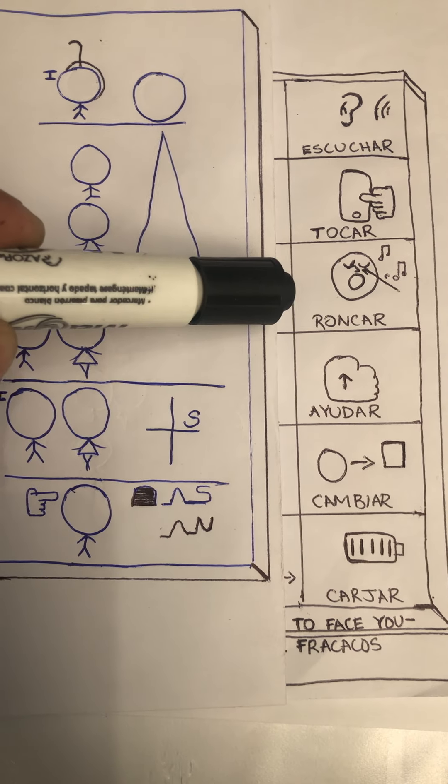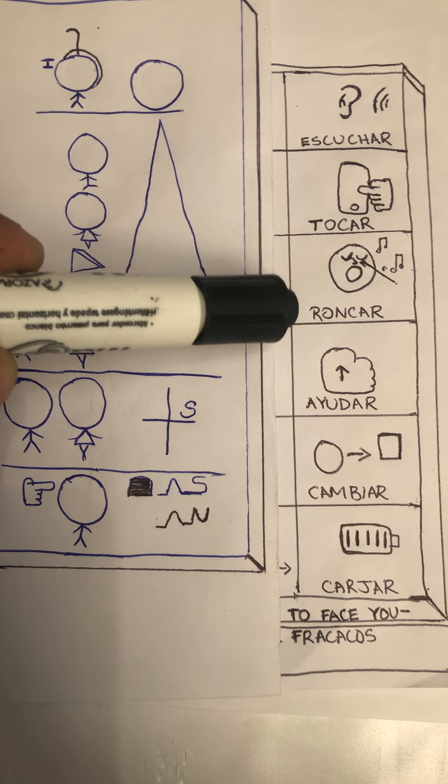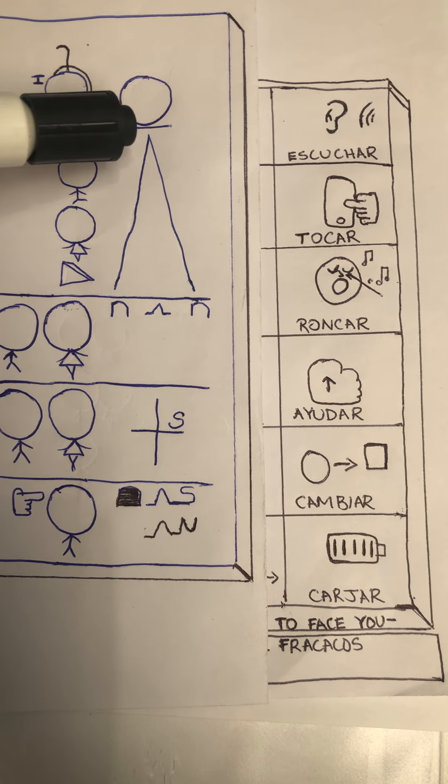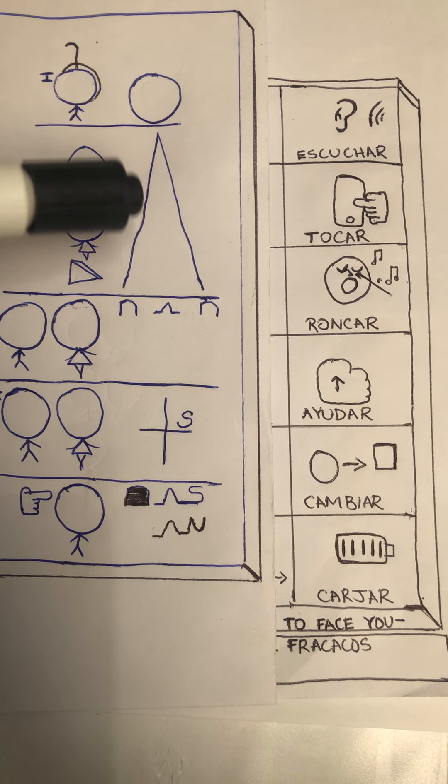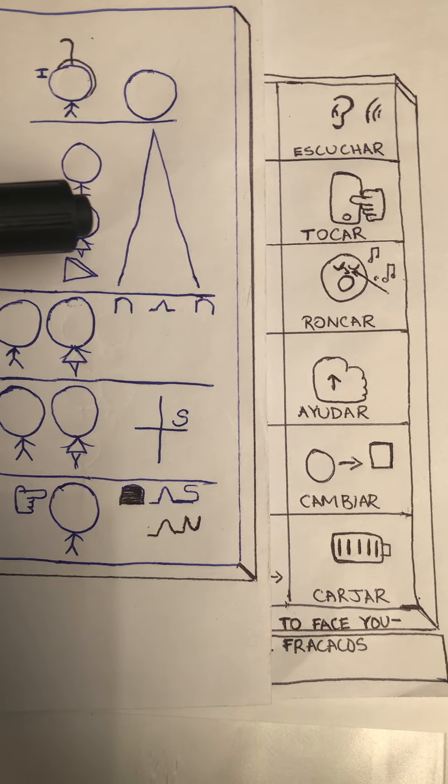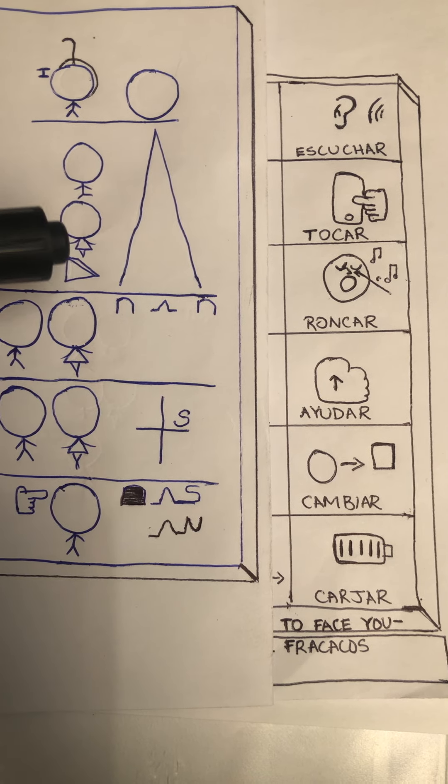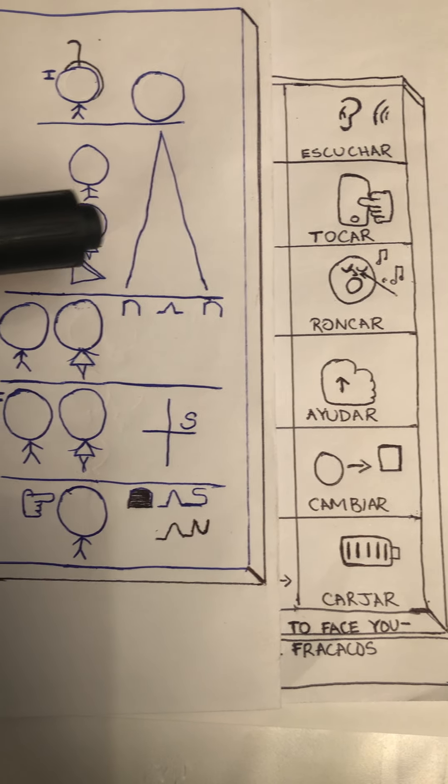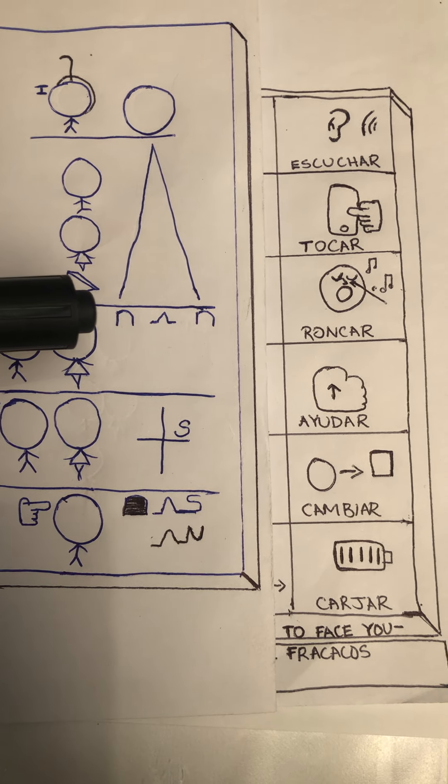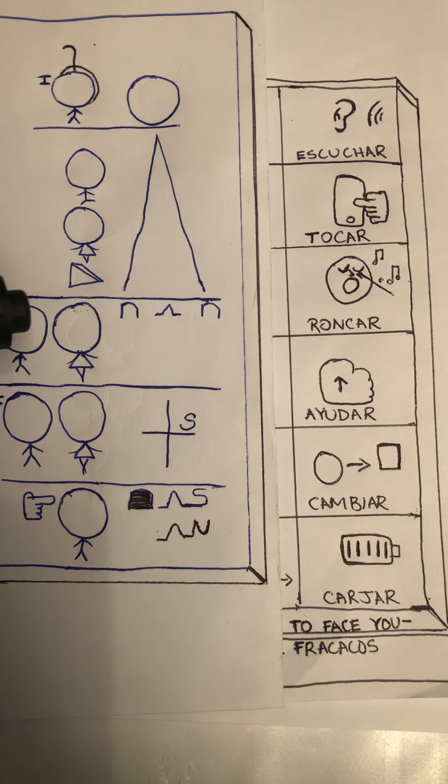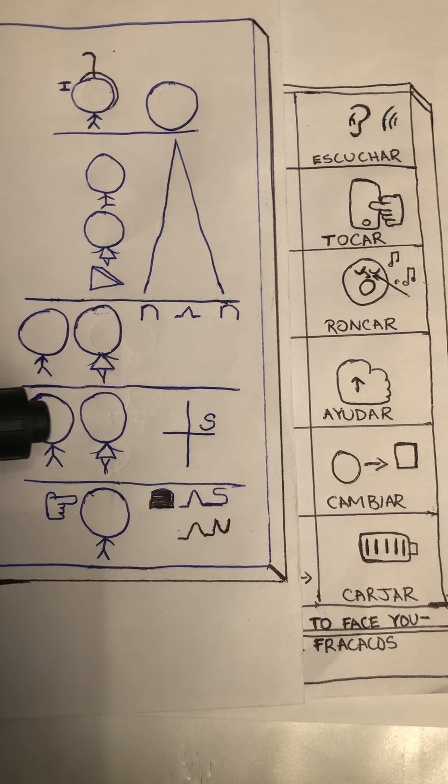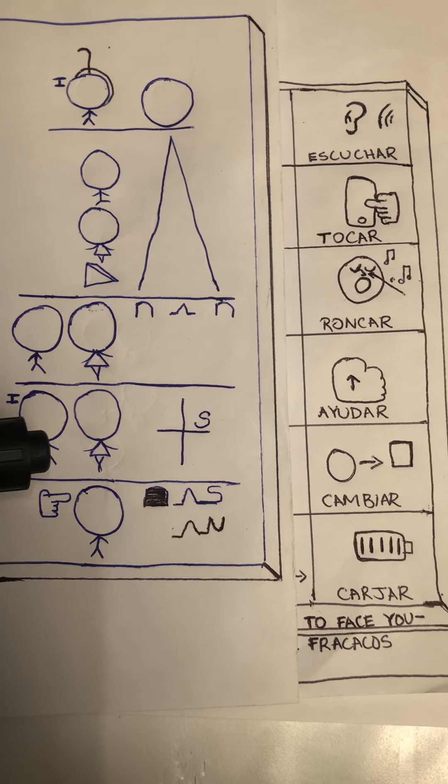Roncar, snore. Yo ronco. Él ronca. Ella ronca. Eso ronca. Ellos roncan. Nosotros roncamos. Tú roncas.